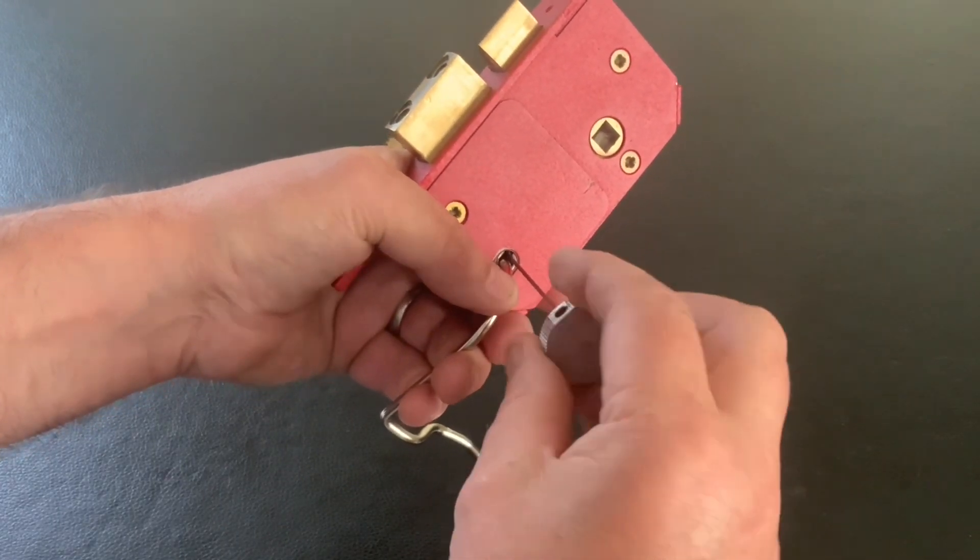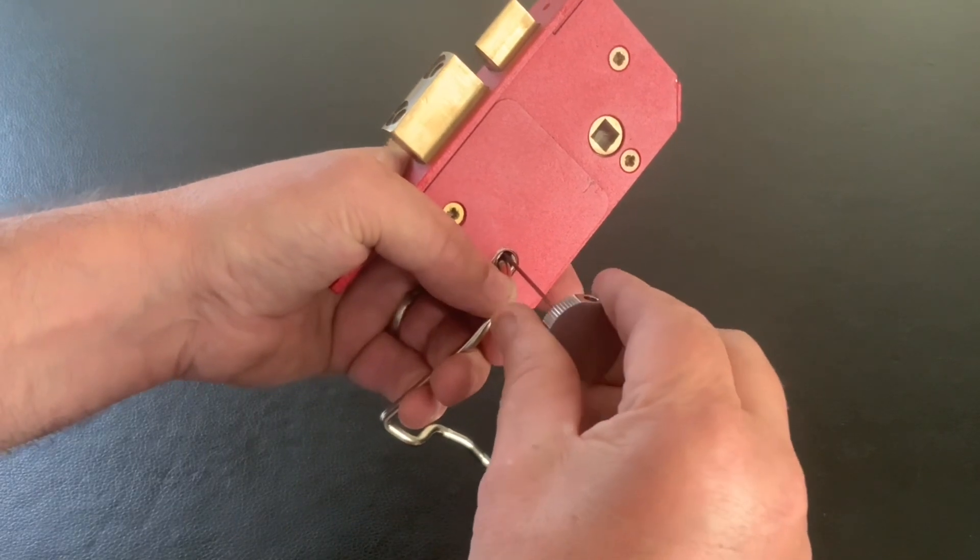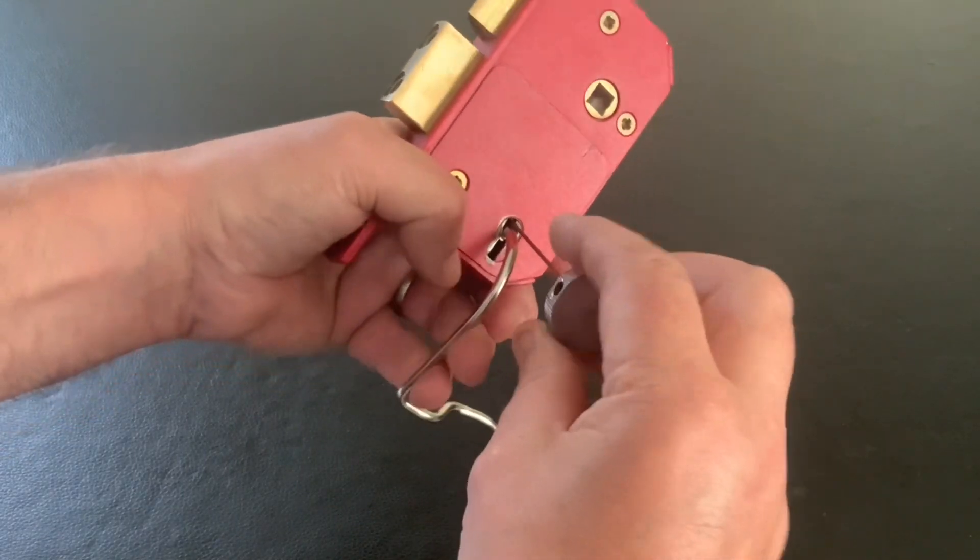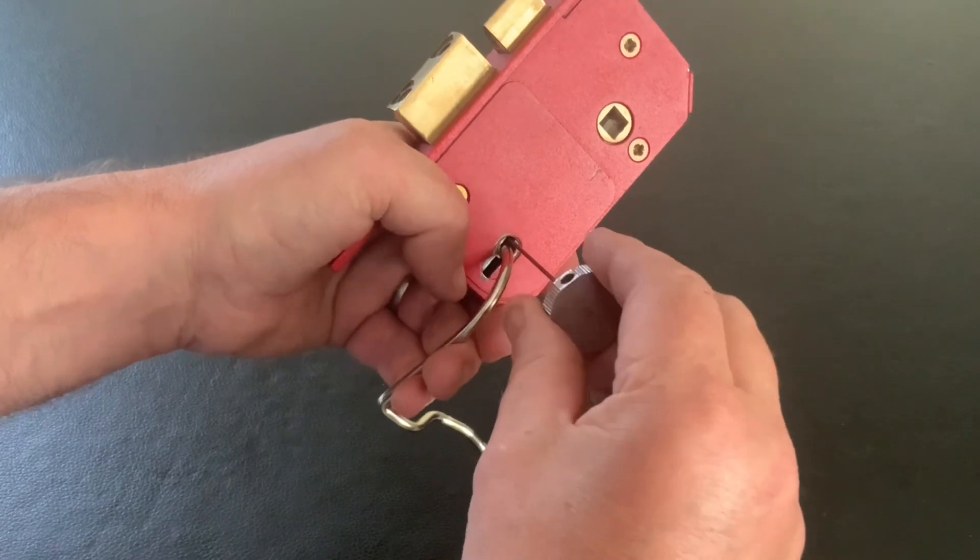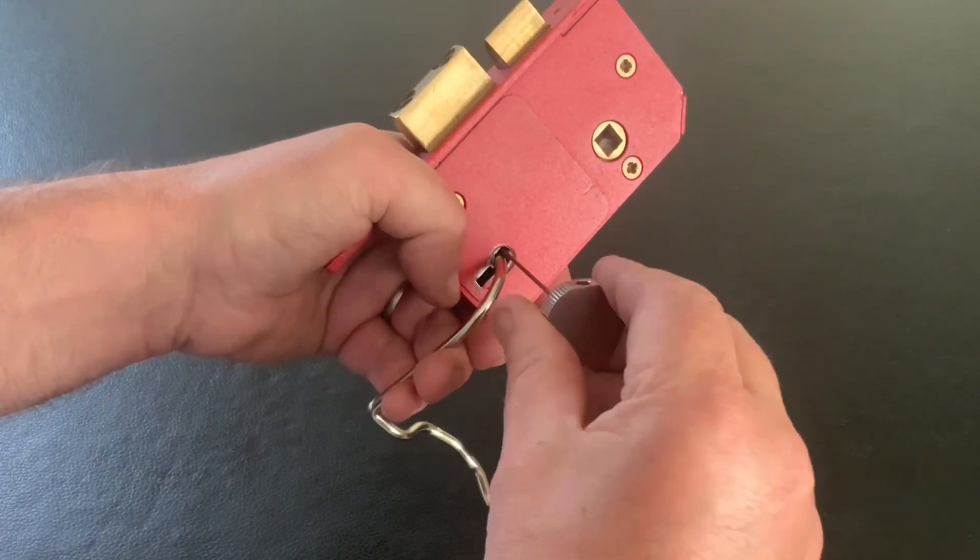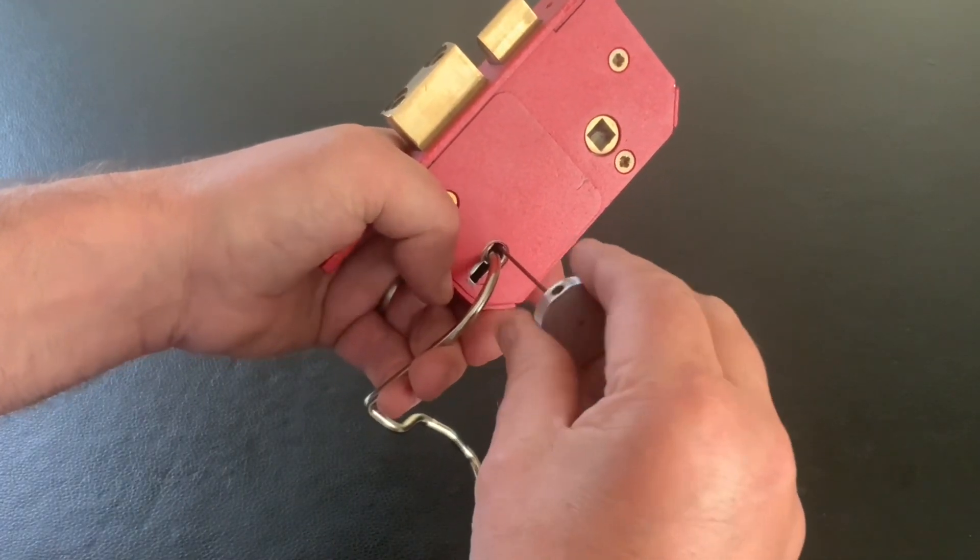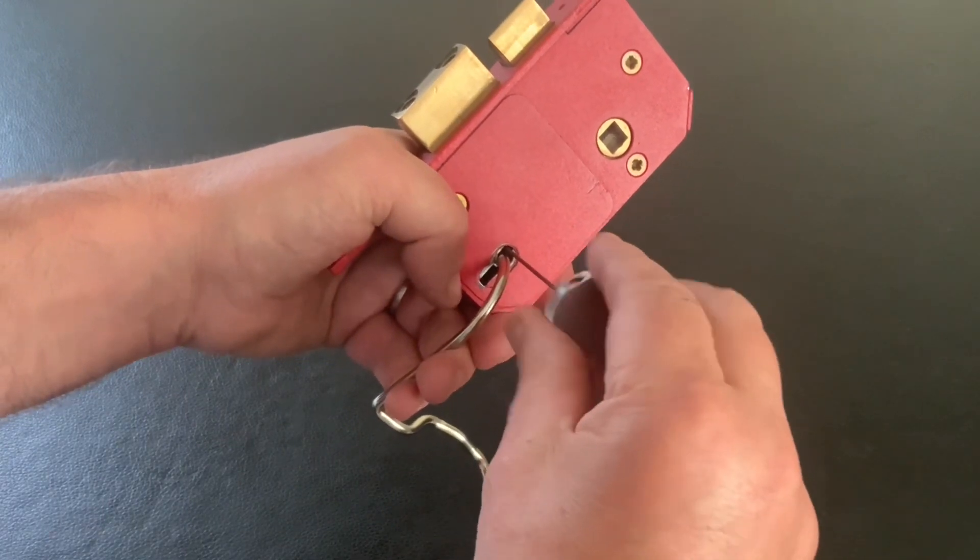You can hear the levers dropping back down when I let the tension off, so it's tensioning it fine. As I say, you could tension your lock using that little mechanism out of the folder.